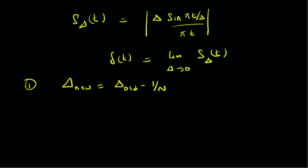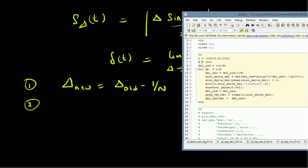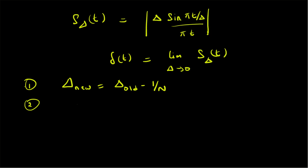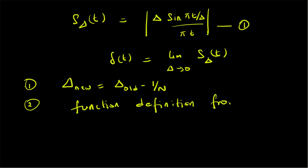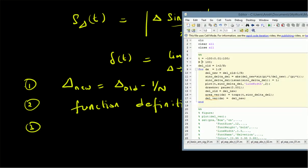Step two: we define the sinc function s_delta itself from the equation — that is, s_delta(t) = |δ · sin(πt/δ) / (πt)|.